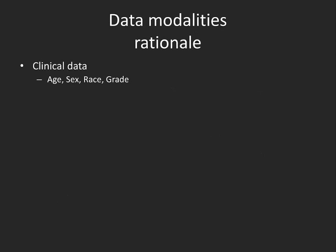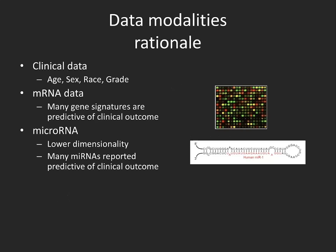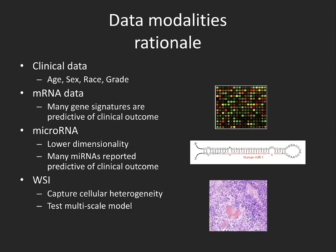What data modalities did we include? We used clinical data common across all cancer sites, including age, sex, race, and grade. We used gene expression data based on several gene signatures predictive of clinical outcome, and microRNA data since several reports show that microRNA signatures are predictive of clinical outcome. Finally, we also used whole slide images, which can contain information about cellular heterogeneity.